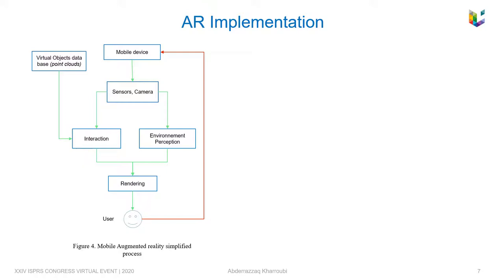In the meantime, the user interaction information is additionally gathered by sensors and then analyzed for tracking objects. Both the result of environment perception and the interaction are used for a seamless integration of virtual content with the real world, meaning a rendering operation is performed, after which the AR is presented to the user.